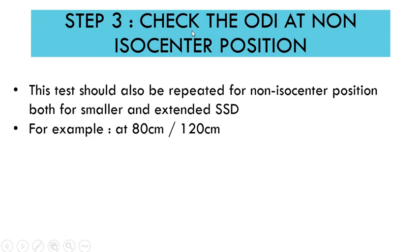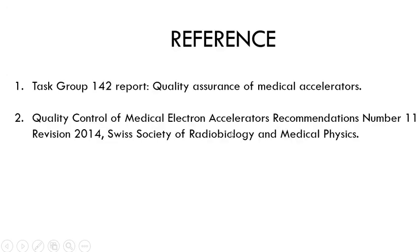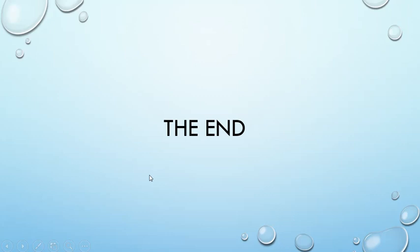You should also perform the same check at non-isocentric positions. If you have a device calibrated 20 centimeters up or 20 centimeters down, you can check those as well. You could also use a stack of plastic phantoms of known distance to check for a smaller SSD and an extended SSD. That's the end of the video — thank you.